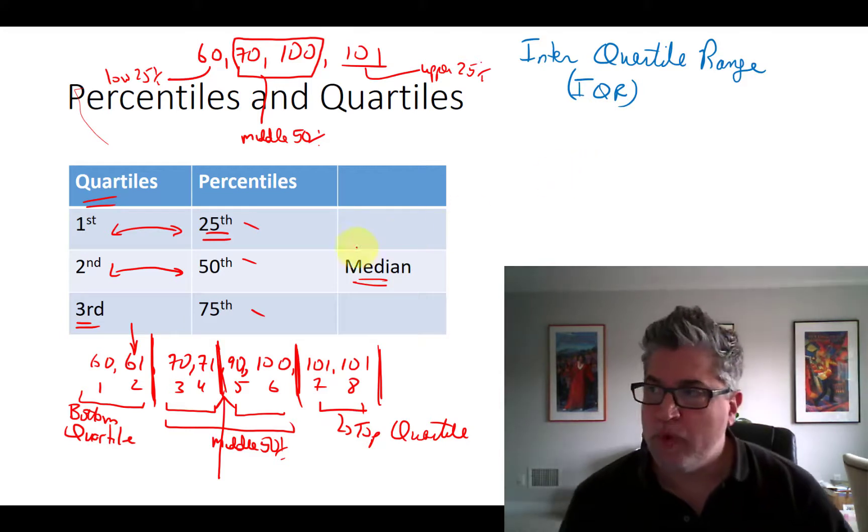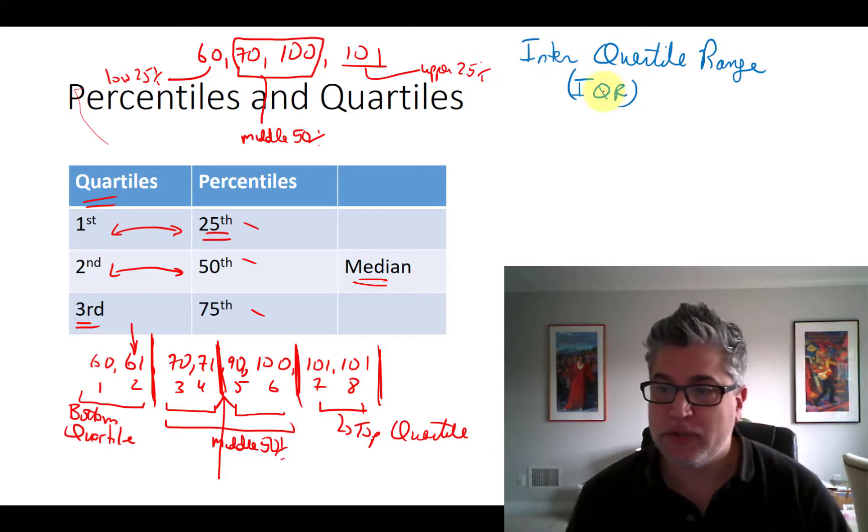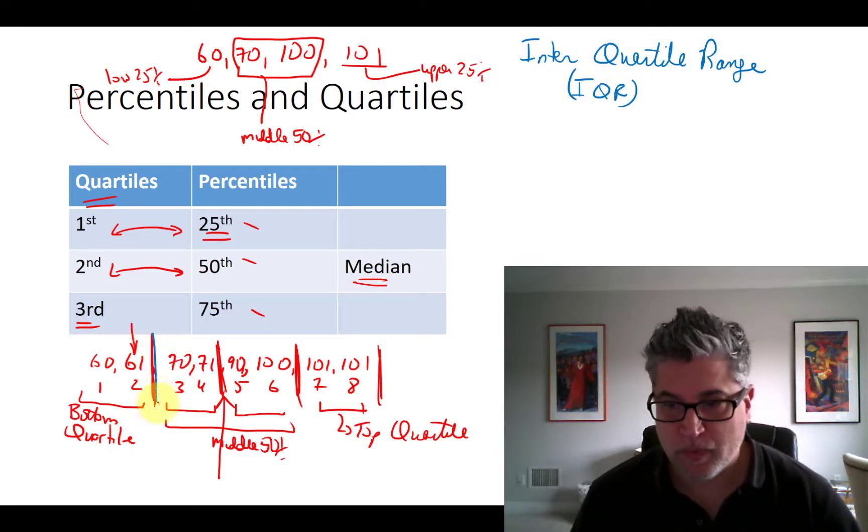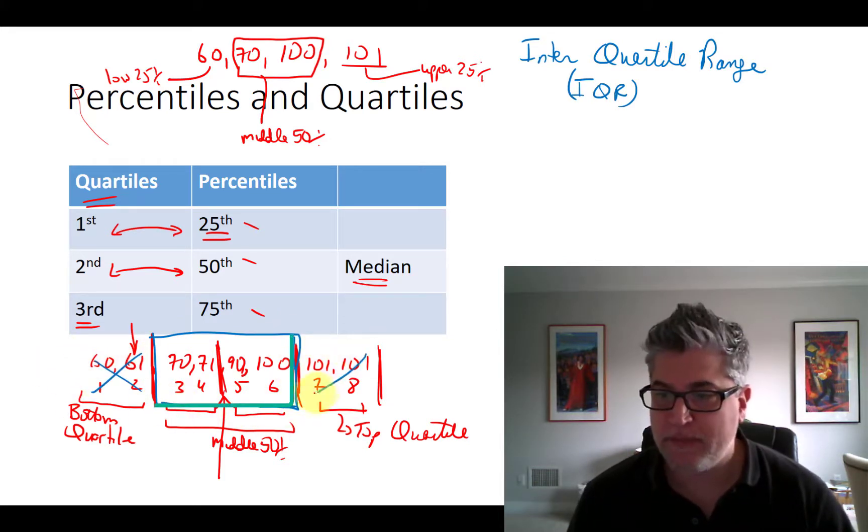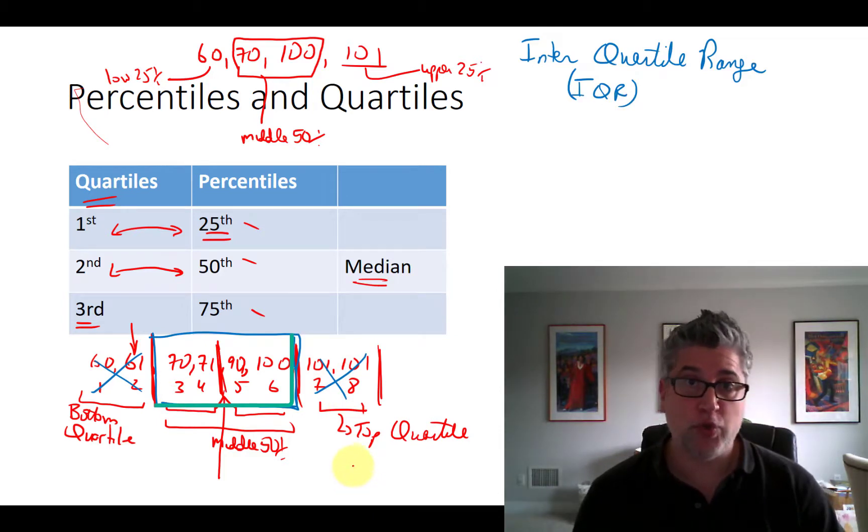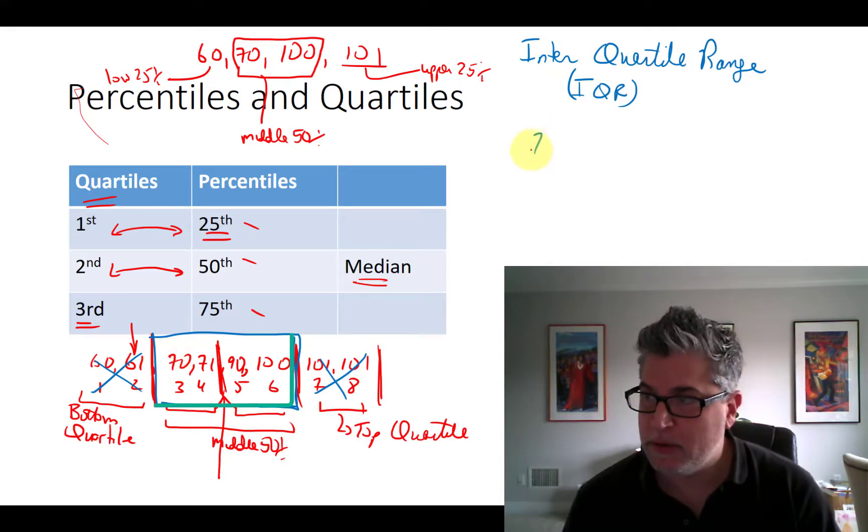We want to know what the range is, the distance between the middle two quartiles. We said that was these two. These are the two middle fourths. Not the bottom fourth, not the top fourth, the middle two quarters. Now in our example, the range of this middle quartile, it goes from 70 all the way up to 100.